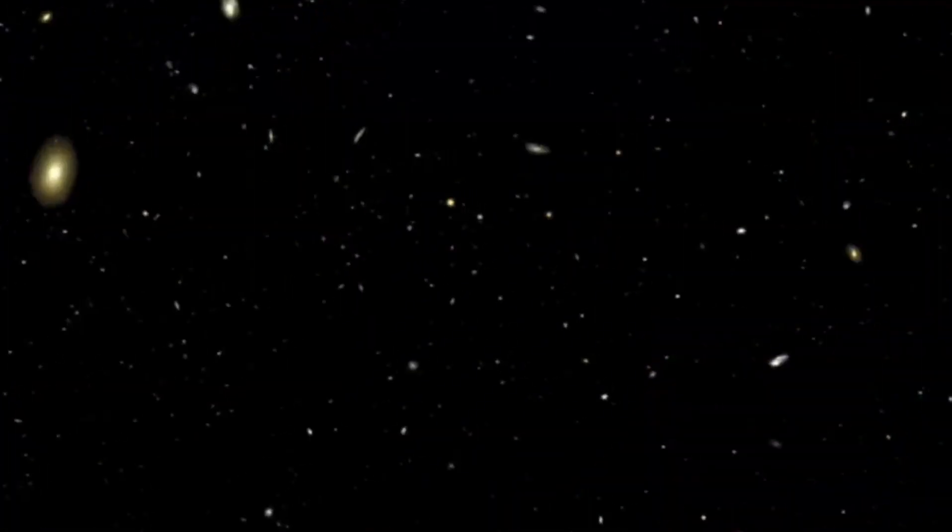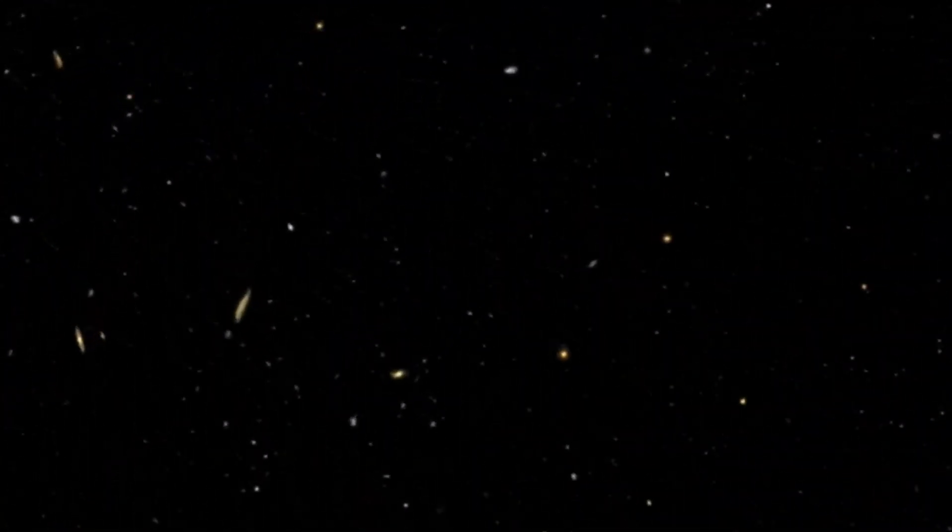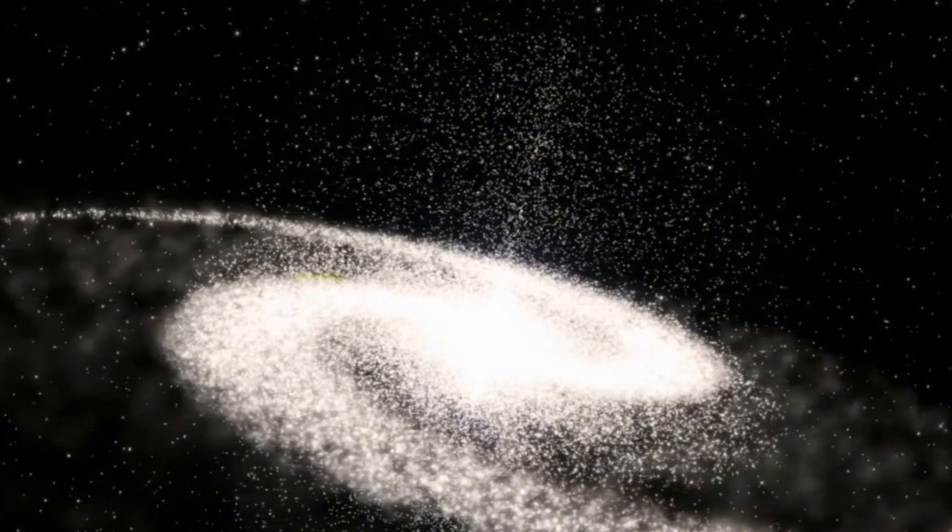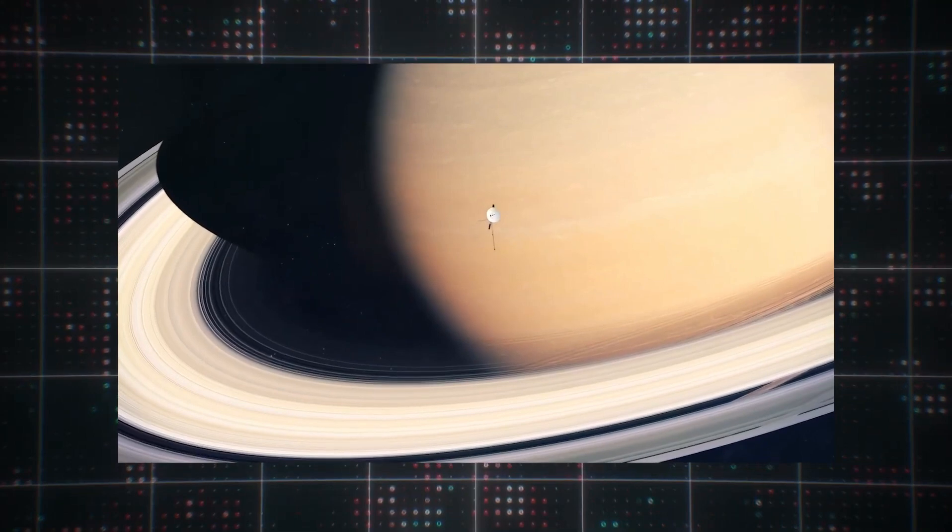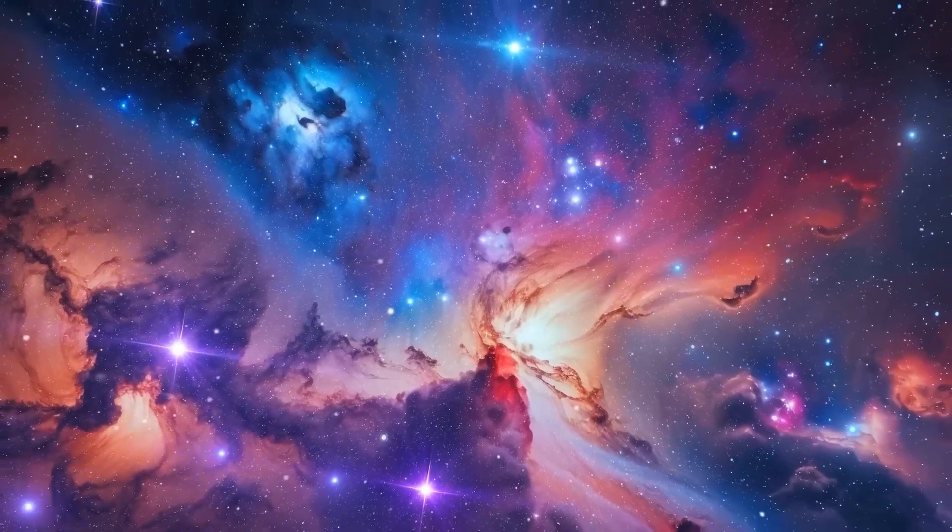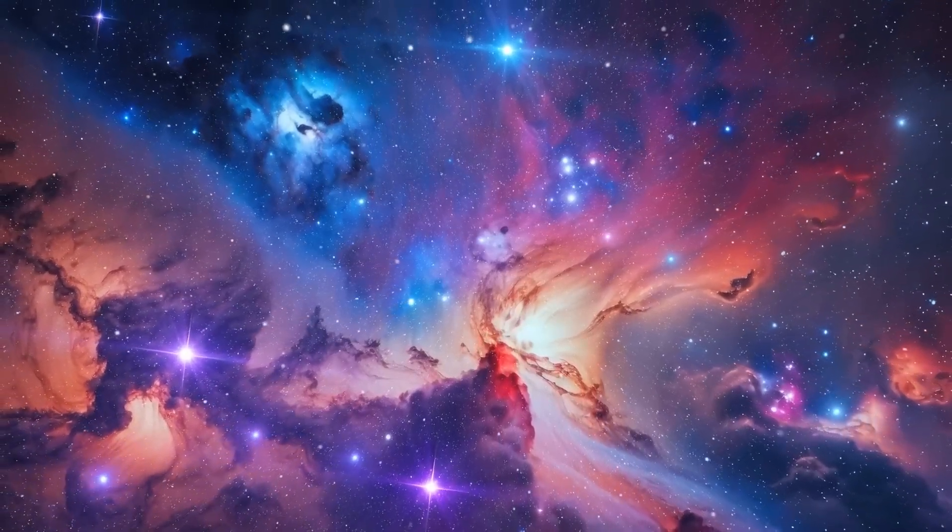We've heard a lot about black holes, but to actually see one might change everything we know about these entities. With technology becoming more advanced each day, scientists have finally been able to observe and confirm the existence of a black hole. Not just one, though. Two groundbreaking observations have provided us with direct evidence of black holes. The first direct observation of a black hole occurred in April 2019, when the Event Horizon Telescope Collaboration captured an image of the supermassive black hole at the center of the galaxy M87. This black hole is located approximately 55 million light-years from Earth.